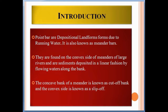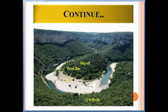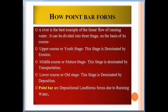The concave bank of a meander is known as the cut bank, and the convex side is known as the slip off. As seen in this photograph, this is the meander and this is the point bar — the concave side is the cut bank while the convex side is the slip off.